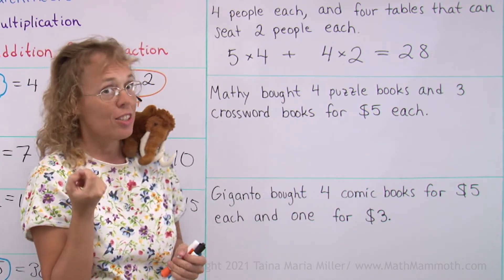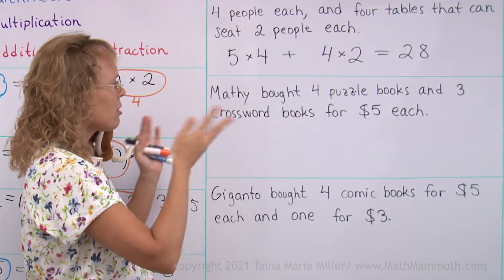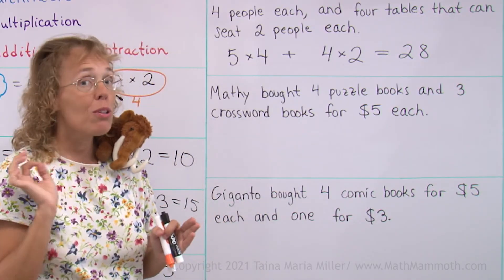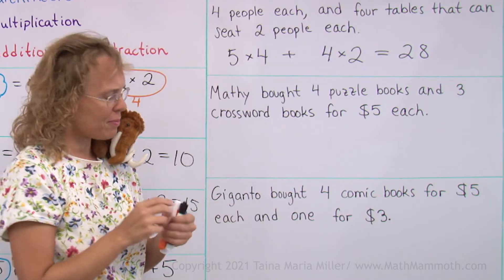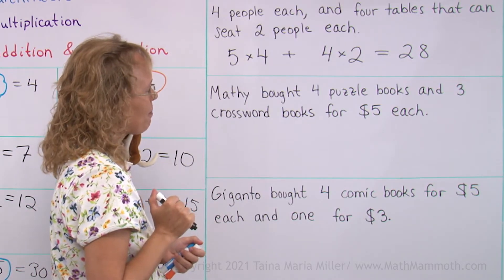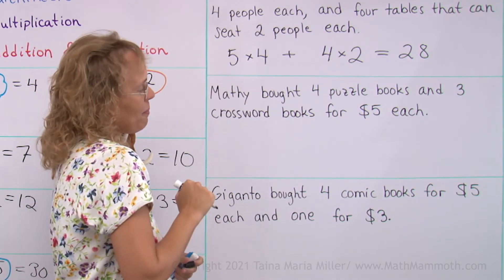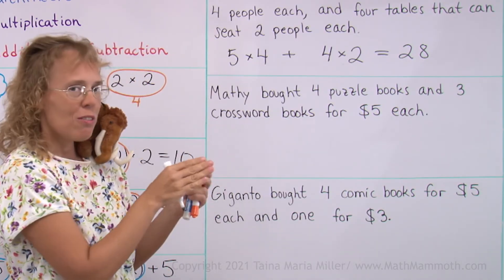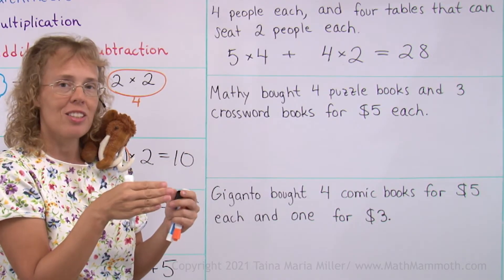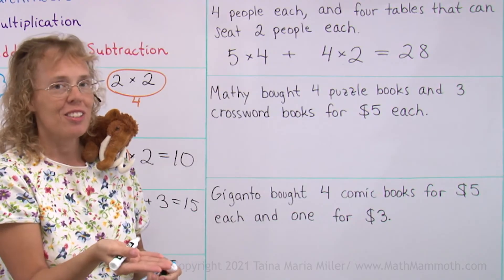Let's figure out the total cost. What do we do with these numbers — 4 and 3 and 5? How can I write a number sentence for the total cost? I can see two ways, but here's one way. Since each one of those books costs $5, I will use multiplication — so many books times $5.